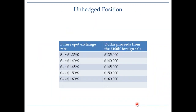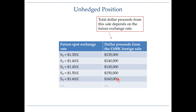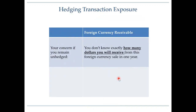Let's look at the situation if you do not hedge. If the future spot rate happens to be $1.35, you will receive your £100,000 and sell it into dollars at $1.35 per pound, receiving $135,000. If the future spot rate is $1.50, you receive $150,000. If it is $1.60, you receive $160,000. The bottom line is you do not know the exact dollar amount you will receive, and your total dollar proceeds depend on the future exchange rate — meaning you are subject to exchange rate risk.